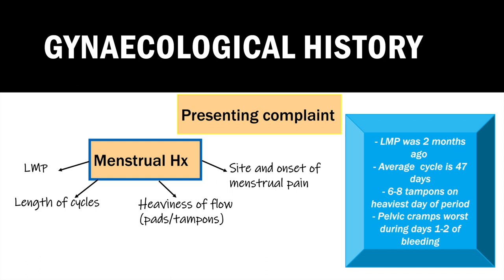Amy reports that the pain is in her lower abdomen, sometimes in her lower back and upper thighs, and it's worse during the first two days of her period. She uses tampons and during her heaviest days gets through six, sometimes eight a day, but doesn't need an additional pad as backup. Her period tracking app shows her last menstrual period was two months ago. You note it would be good practice to do a pregnancy test. Her average cycle is 47 days; normal would be between 21 and 35 days.